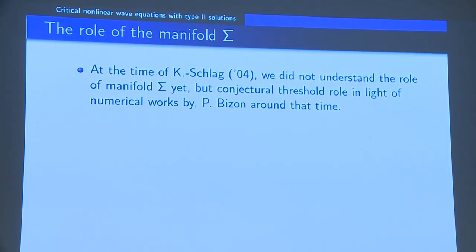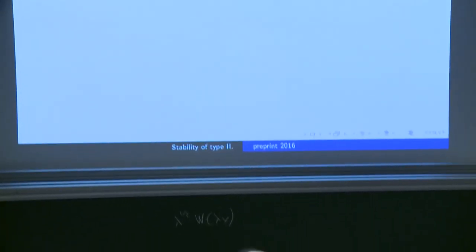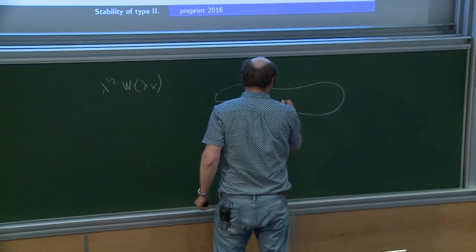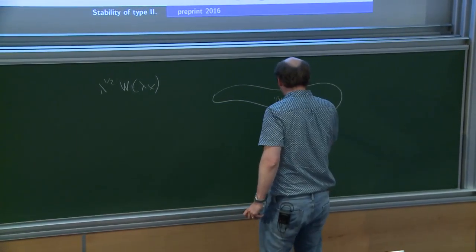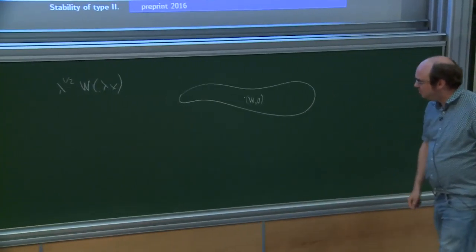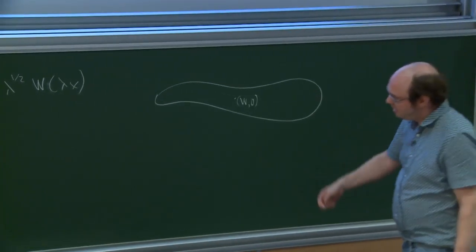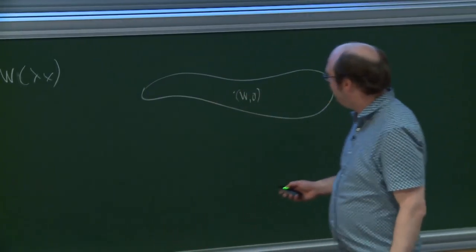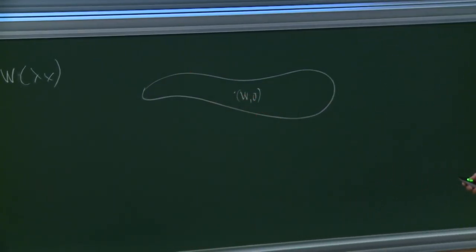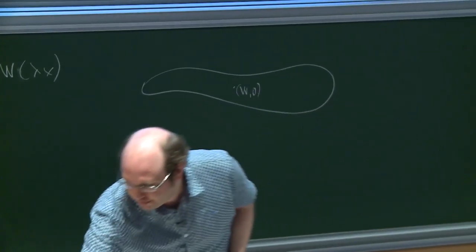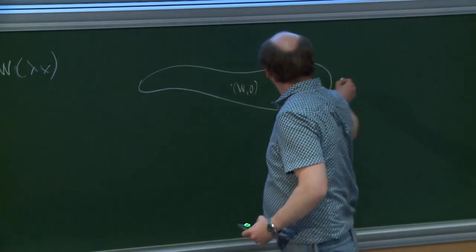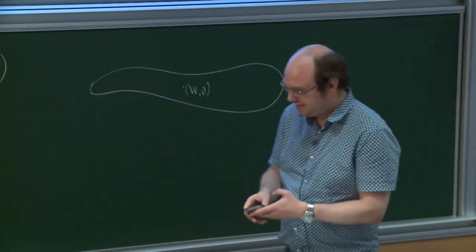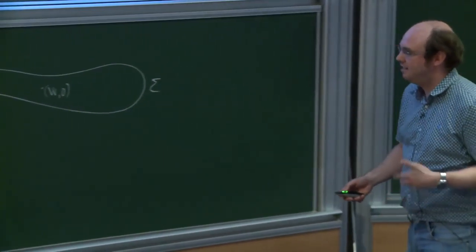We had this co-dimension one manifold passing through the initial data of the static solution. The reason for this co-dimension one set was just technical. We didn't really understand if this kind of hypersurface — which I called sigma in the statement — has some sort of intrinsic characterization.